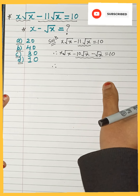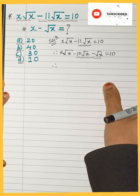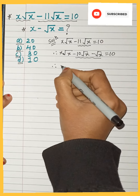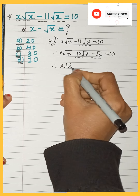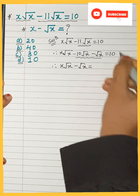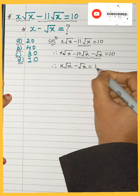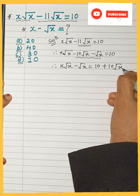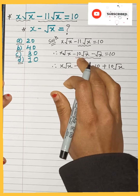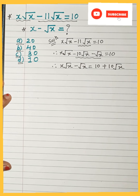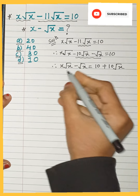Now we take −10√x to the other side. So x√x − √x is left on the left side, and transposing that term to the right side gives us 10 + 10√x.